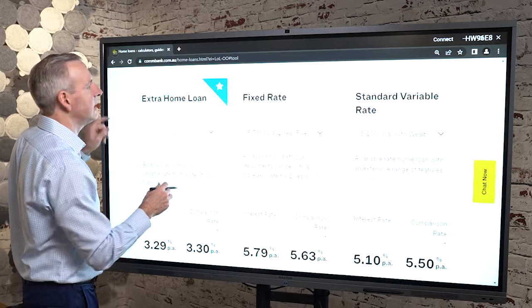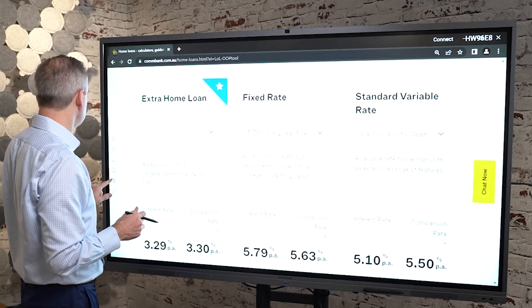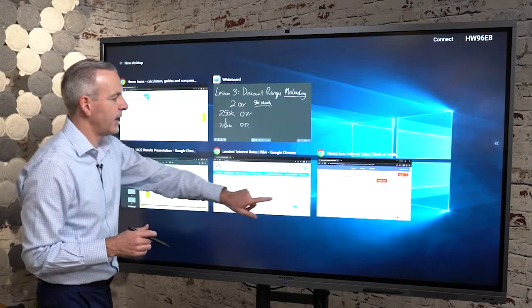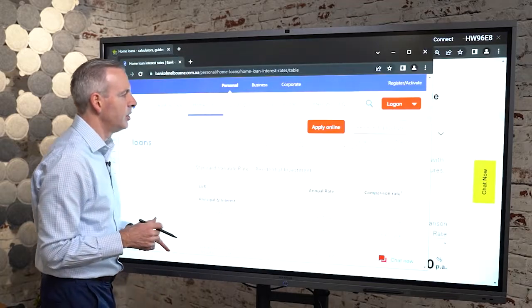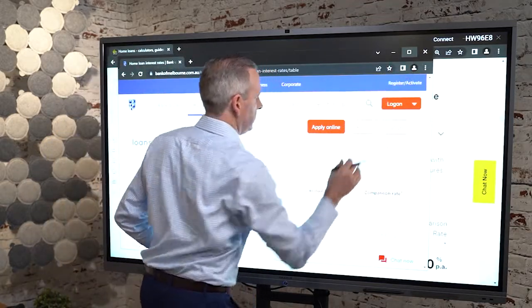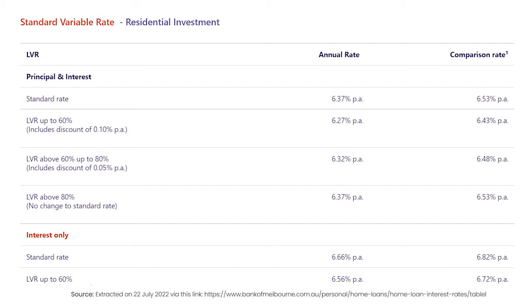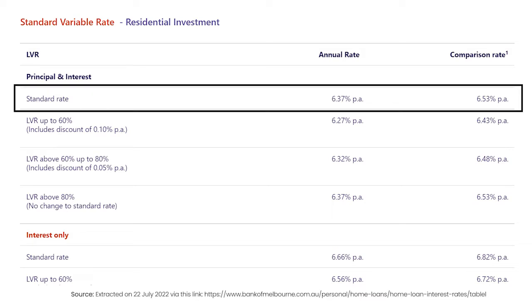Now, if I take a different example where I move across and have a look at say Bank of Melbourne as an example, we can see here, let's go to full screen. We can see here with Bank of Melbourne, their standard variable rate for principal and interest is 6.37.